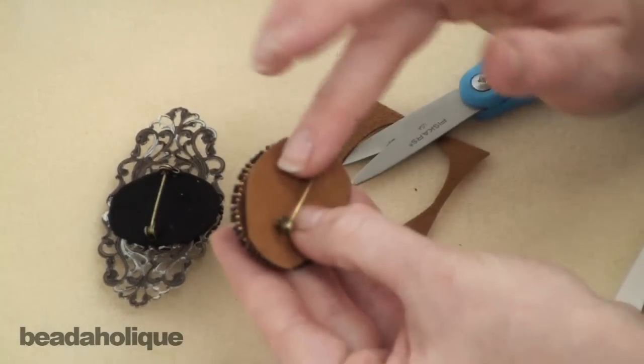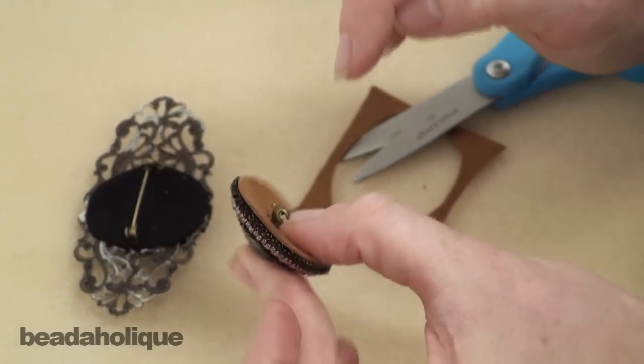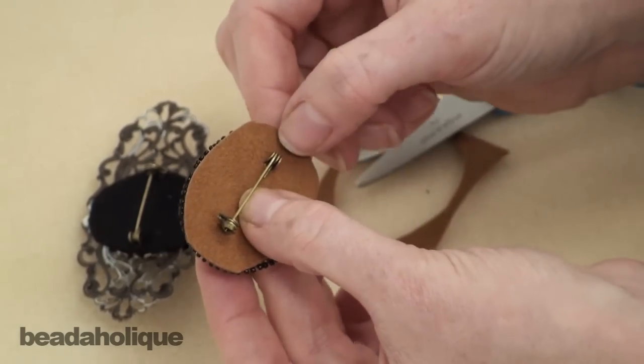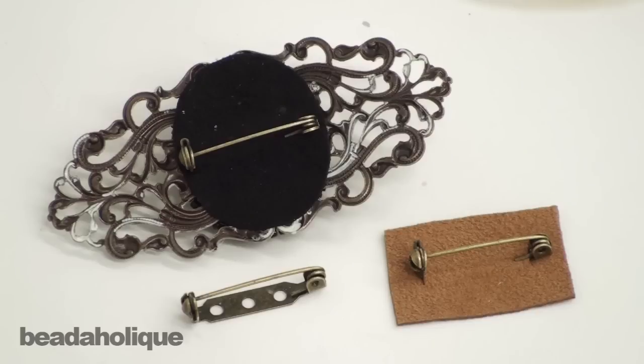You put it on, glue it to the Lacy's Stiff Stuff, and then trim your actual ultra suede backing to match the edge of the Lacy's. And that is all there is to embedding a pin back into ultra suede for your bead embroidery and other projects.